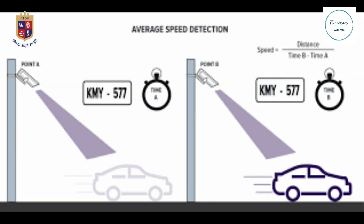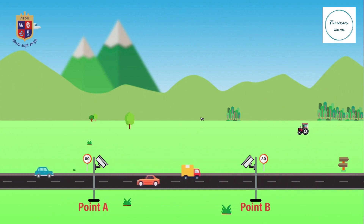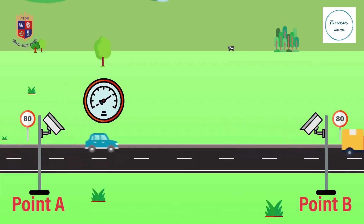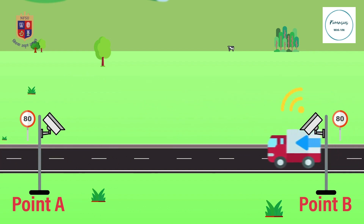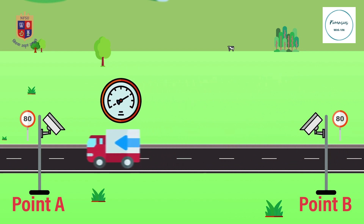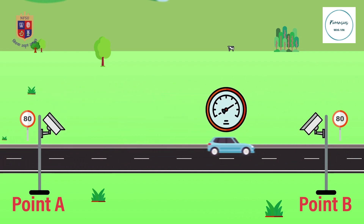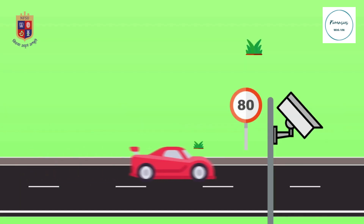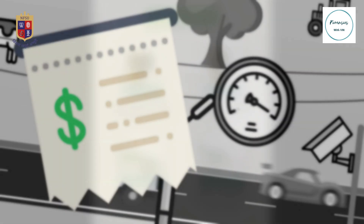Now let's talk about average speed cameras and how they work. Average speed cameras, sometimes called point-to-point cameras, record a vehicle's average speed between two points along a stretch of road. This provides a precise reading of whether drivers are speeding over a sustained distance rather than at a single point. Fines are only issued if the average speed over that entire distance exceeds the legal limit.